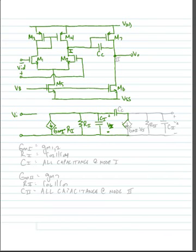The voltage developed across this resistor is V1. We've got another dependent current source equal to GM2 times V1, another resistance R2, and a capacitance C2. And we take our output voltage across this resistor and capacitor.